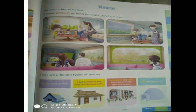Apartments and Villas are made of bricks, steel and cement. Igloos are made of ice.